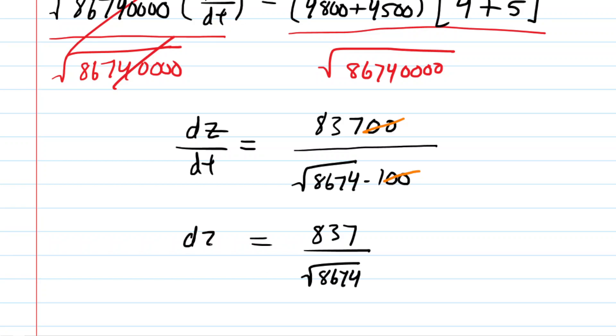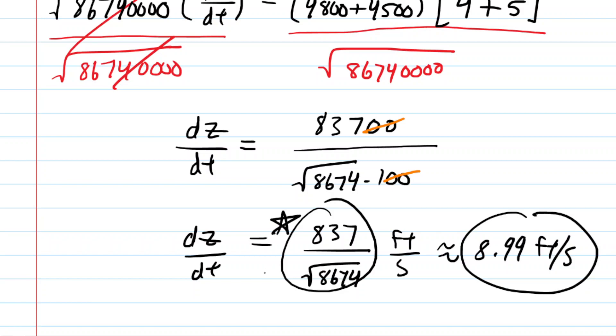This is a measure of a rate of change in distance per unit time. So this would be measured in feet per second. And if you punch that result right there into a calculator, you could get an approximate value of about 8.99 also feet per second. So there's the approximate answer and right here is the exact answer.